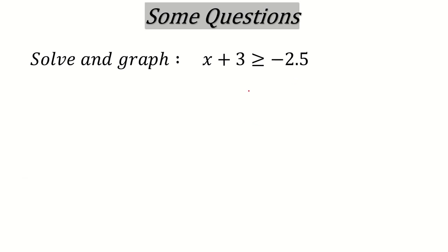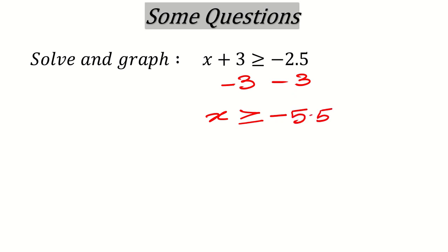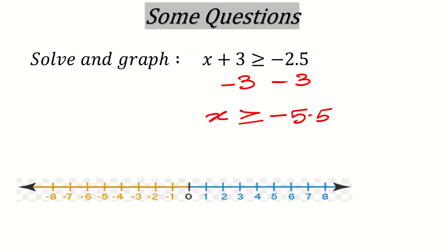Another question: x plus 3 greater than or equal to minus 2.5. I have taken this decimal example but the method remains the same. Subtract 3 from both sides. So x is greater than or equal to minus 2.5 minus 3. Both are negative so just add them: the answer is minus 5.5. On the number line, minus 5.5 is the midpoint between minus 5 and minus 6. Since it is greater than or equal to, we use a filled circle and the line goes to the right.